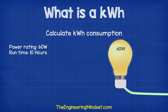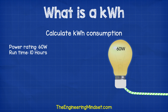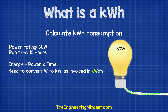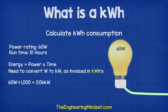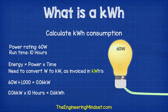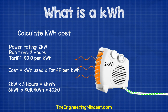How about smaller items when they're rated in watts? Let's say we have a 60 watt light bulb and it is switched on for 10 hours. We still use the formula energy equals power multiplied by time, but we need to convert the watts into kilowatts as we're invoiced in kilowatt hours. So 60 divided by 1,000 is 0.06 kilowatts, and 0.06 kilowatts multiplied by the runtime of 10 hours equals 0.6 kilowatt hours.